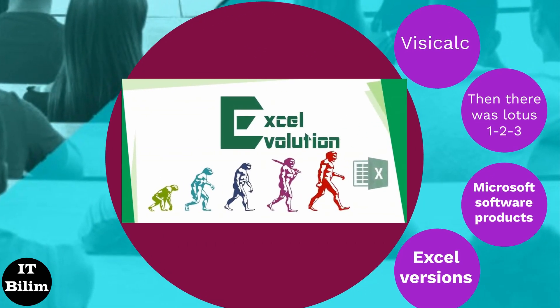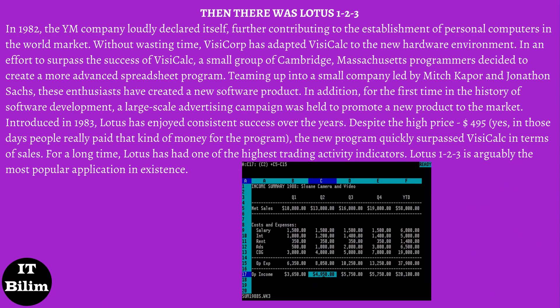Then there was Lotus 1-2-3. In 1982, the IBM company loudly declared itself, further contributing to the establishment of personal computers in the world market. Without wasting time, VisiCorp adapted VisiCalc to the new hardware environment. In an effort to surpass the success of VisiCalc, a small group of Cambridge, Massachusetts programmers decided to create a more advanced spreadsheet program. Teaming up into a small company led by Mitch Kapor and Jonathan Sachs, these enthusiasts created a new software product. For the first time in the history of software development, a large-scale advertising campaign was held to promote a new product to the market.